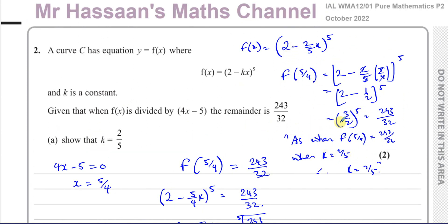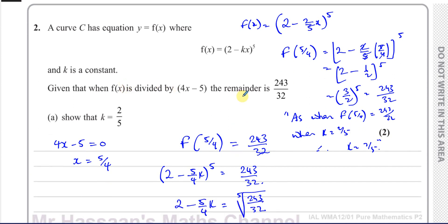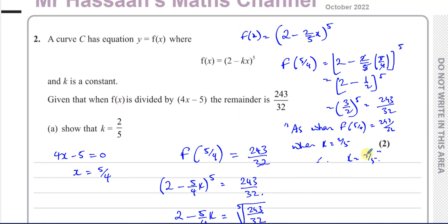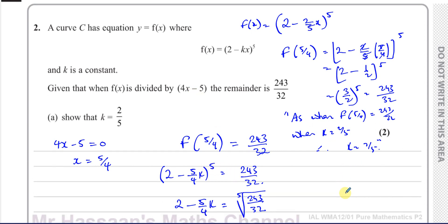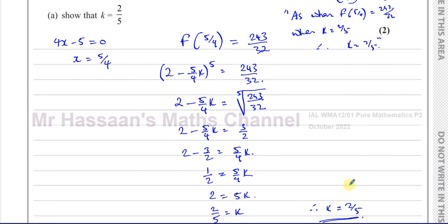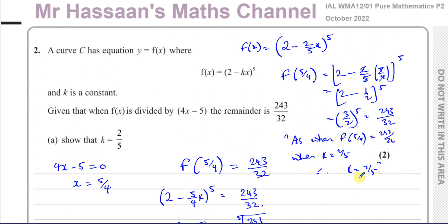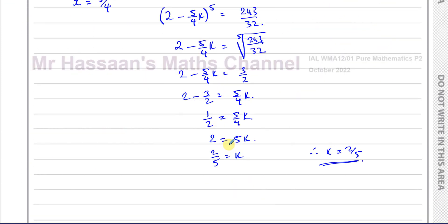A third method you could use is algebraic long division, but that would be a bit of a hassle because this is raised to the power of 5. If the question said 'use the remainder theorem' you wouldn't be able to use long division anyway. But since it doesn't say that, it's a possibility — though not very sensible given the power of 5. So there we have part A completed.